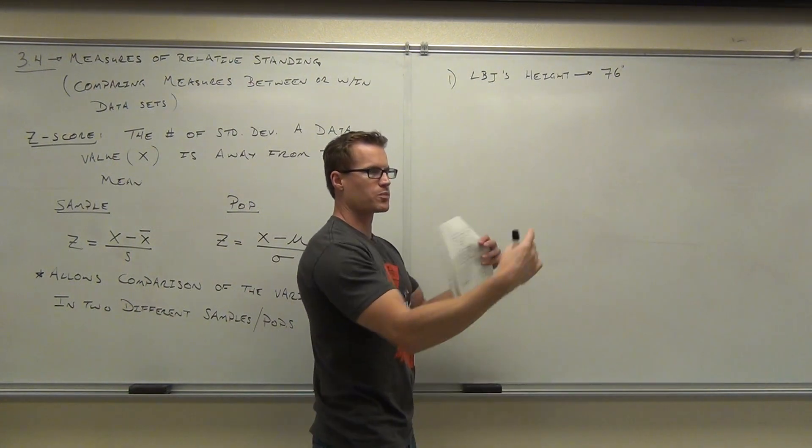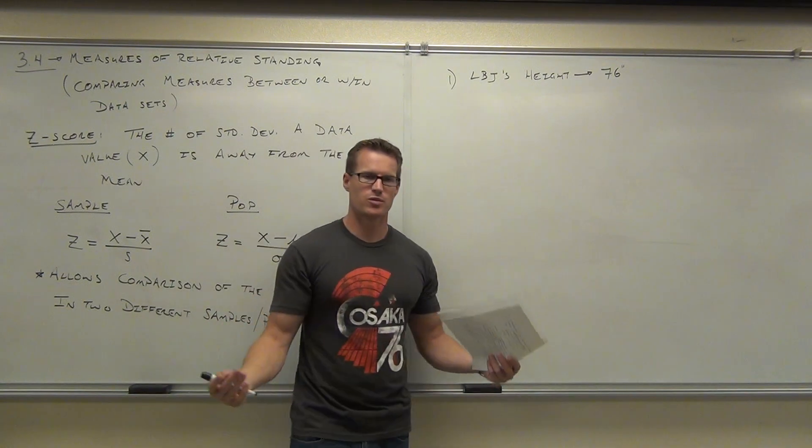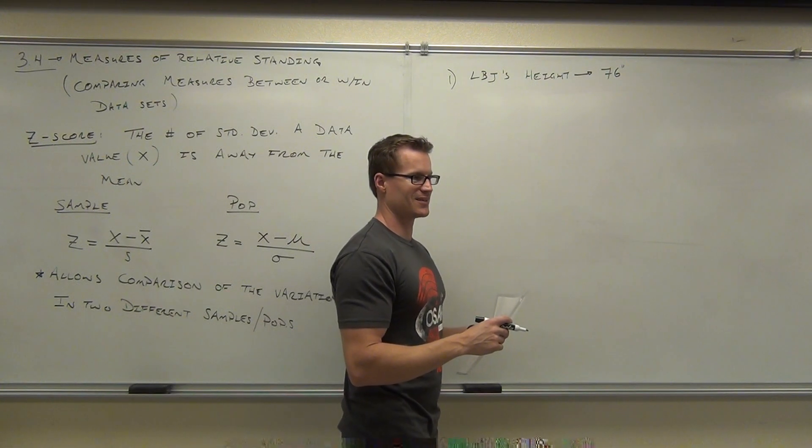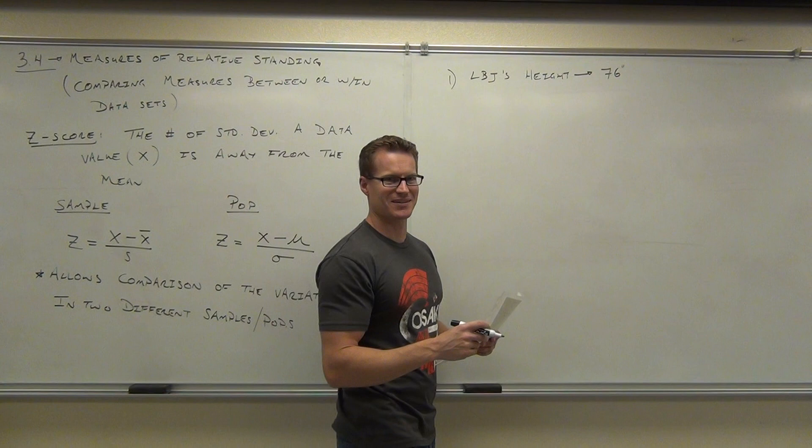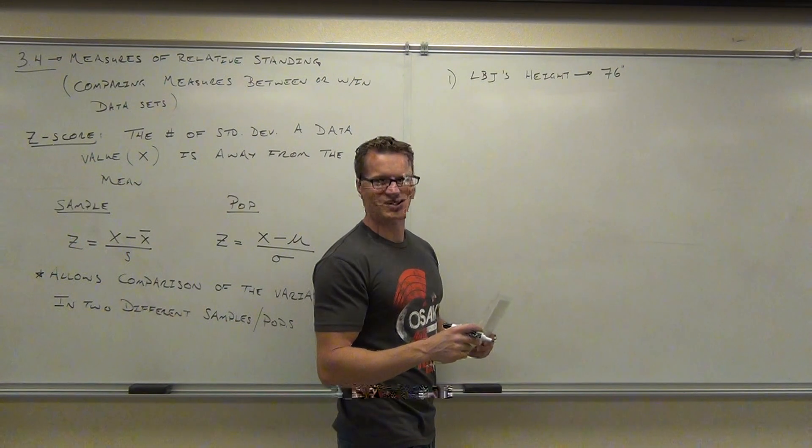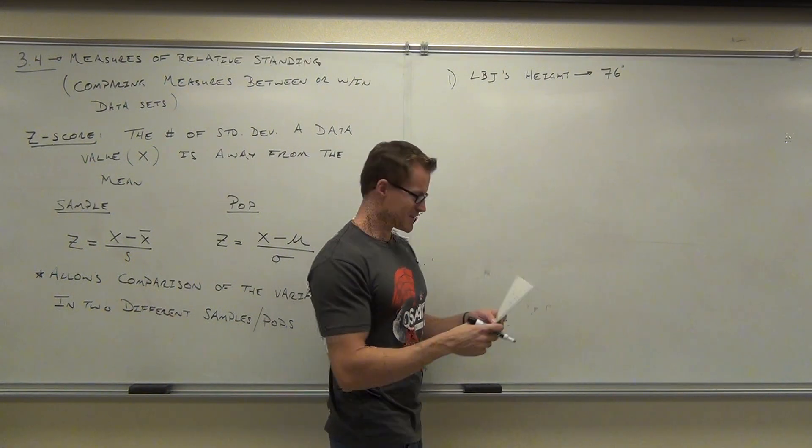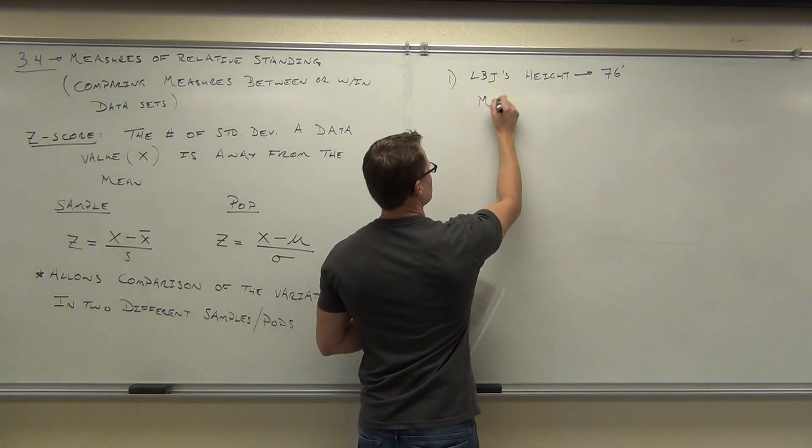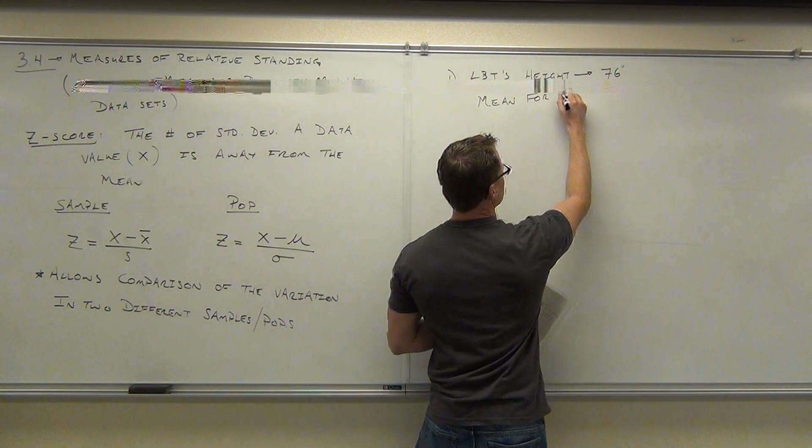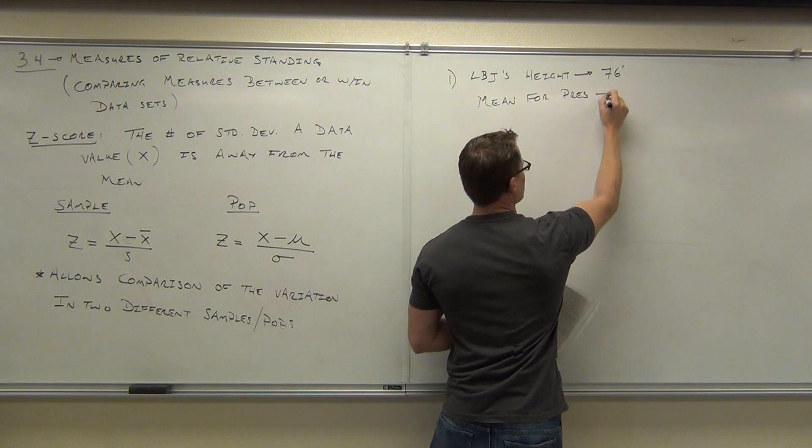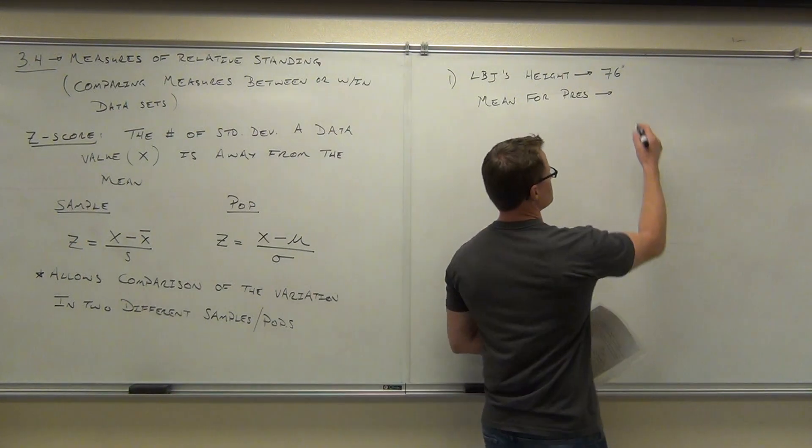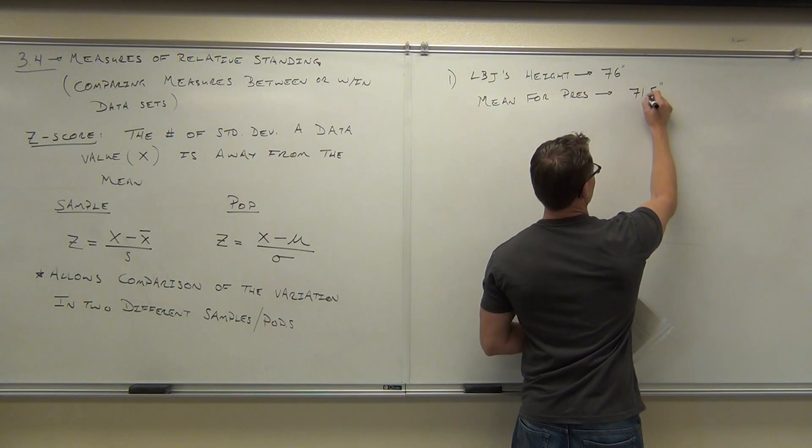Now, the mean for presidents. If you take all the presidents' heights over history, you add them all up, you divide by the number of presidents, however many there are. How many are there? I don't know. Several. More than like 4, right? Like 40, 50 something. Are we in the 50s? Isn't that horrible that I don't know this? Oh my gosh, I feel so ashamed. But it's a number, right? We're close to 50 now. The mean height for presidents is 71.5 inches.